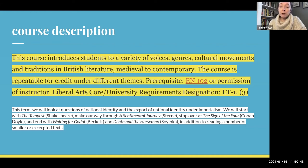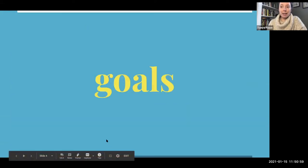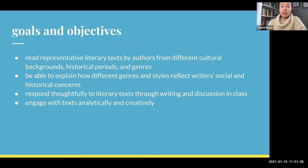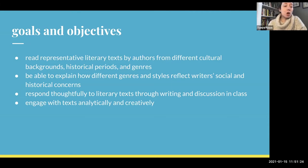So this is a Literature I course in the Liberal Arts Core. Our goals for the class are pretty general, as befits a Lit One course. Your goal is to read some representative literary texts by authors from different cultural backgrounds, historical periods, and genres. You should be able, at the end of the class, to explain how different genres or styles reflect writers' social and historical concerns. You should also be thinking about how to respond thoughtfully to literary texts through your writing and class discussion, and you will be learning how to engage with these texts both analytically and creatively.